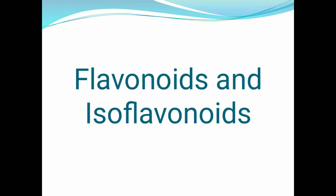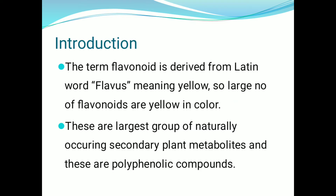Good morning students. In paper 4, fourth unit is flavonoids and isoflavonoids. Today we discuss about flavonoids. The term flavonoid is derived from the Latin word 'flavus.' Flavus means yellow color, so a large number of flavonoids appear yellow in color.